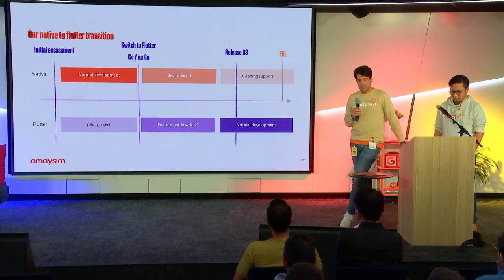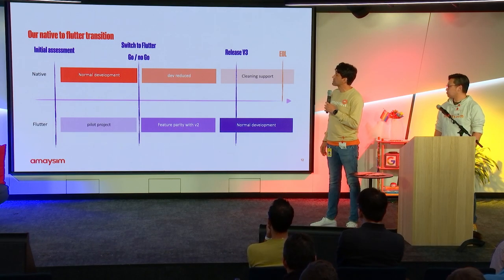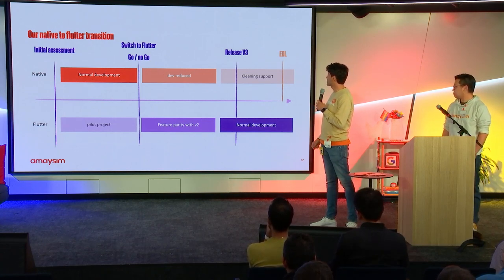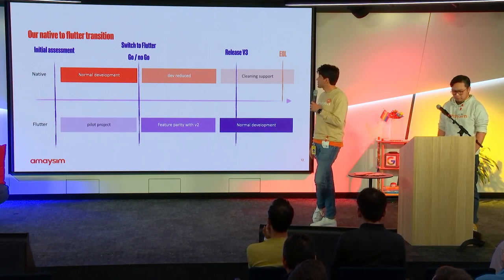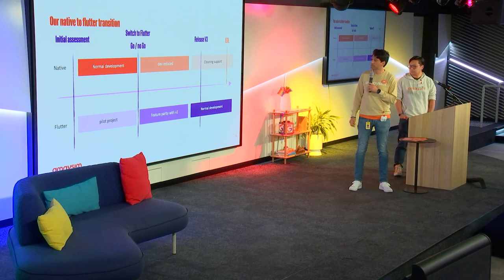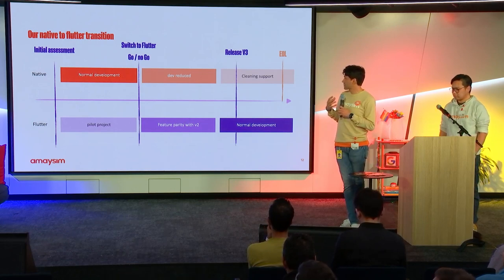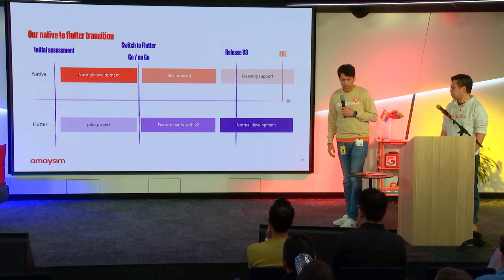The native-to-Flutter transition actually started when we decided to begin a pilot project. We already had a fully functioning app, and it's not easy to convince the business that moving to cross-platform is a good strategy. So while normal development continued, we allocated a small group to work on the pilot — just a few MVP journeys that we really cared about, where we knew we could spot problems with the new tools and languages. All animations and transitions were included. It was a high-fidelity pilot project.